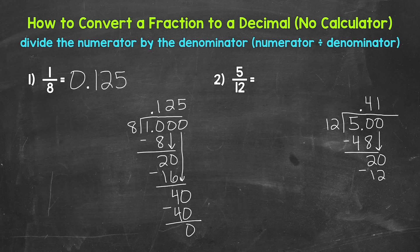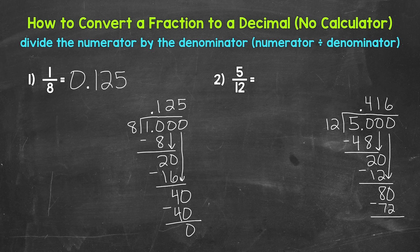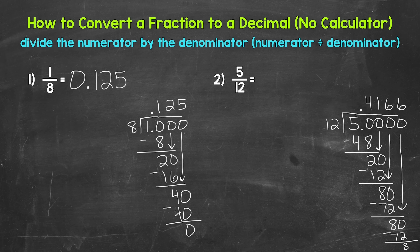We need to continue on. Use another zero and bring it down — now we have twenty. Twenty divided by twelve is one. One times twelve is twelve. Subtract: twenty minus twelve is eight. Use another zero — now we have eighty. Eighty divided by twelve is six — six times twelve is seventy-two. Subtract: eighty minus seventy-two is eight. Use another zero — eighty again — six, seventy-two, remainder eight. I'm going to stop there because that pattern is going to continue on forever. We end up with a repeating decimal.